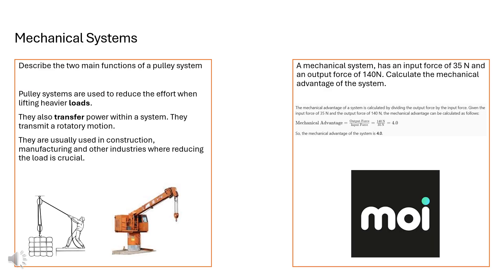Here are the answers to two of these questions. The pulley system is used to reduce the effort when lifting heavier loads. You may have seen these used on cranes or there's a diagram here of a gent trying to use a pulley to lift something that's very hard to lift. They transfer the power within the system and they use a rotary motion to do this. They usually are used in construction and manufacturing and other industries where the load is crucial.